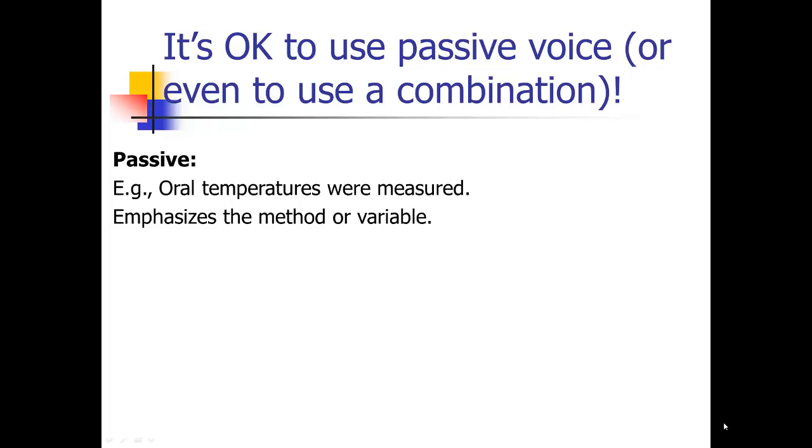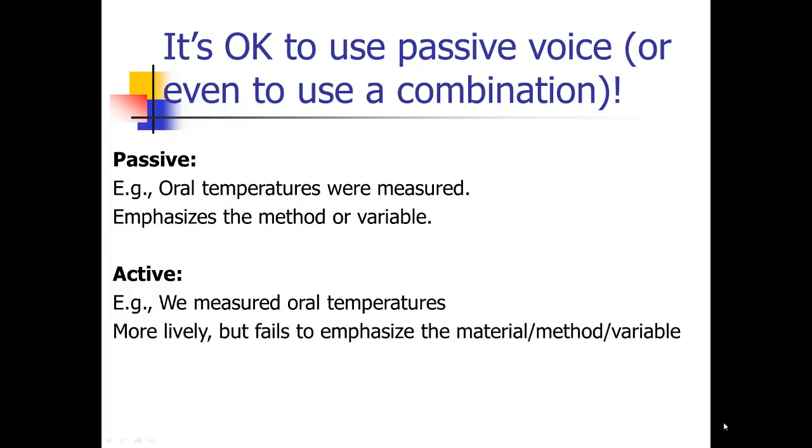For example, 'oral temperatures were measured.' That's in the passive voice. That emphasizes the oral temperatures as opposed to the authors of the paper, and that's appropriate there. The other reason it's okay to use the passive voice is that most people don't read the method section word for word. It's okay if the method section is a little boring. You can expect that your reader is just going to skim that method section and look for the key things that they want more information on. You don't have to treat it exactly like it's going to be great prose.